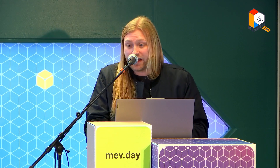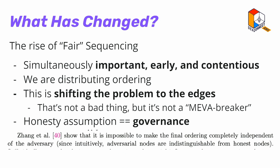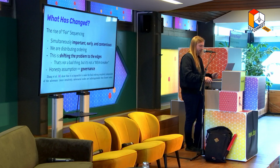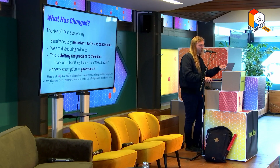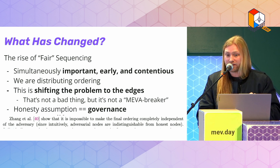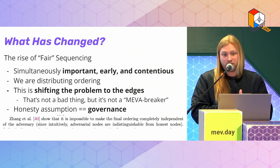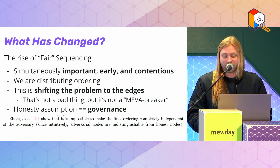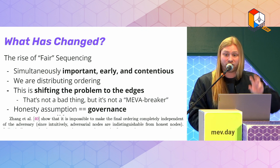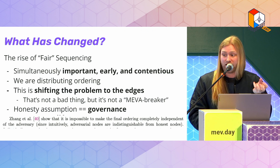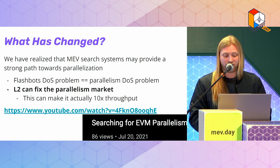What you're doing with fair sequencing protocols is shifting the problem of sequencing at one centralized party to the edges — but individually, the problems still exist at those edges. We're also going to start getting governance involved, and I think this has the potential to get really hairy. Fair sequencing protocols rely on an honesty assumption that is not possible to distinguish — even outside the protocol — from malicious behavior. You can't really distinguish an adversary from someone with weird networking. In general, what we want with L2s is governance-minimized systems, so including fair sequencing will make sequencing a big part of L2 governance.